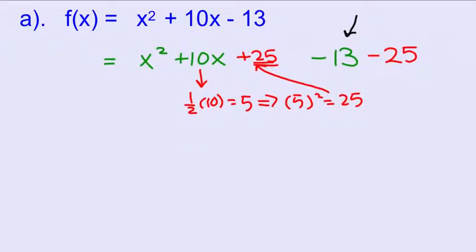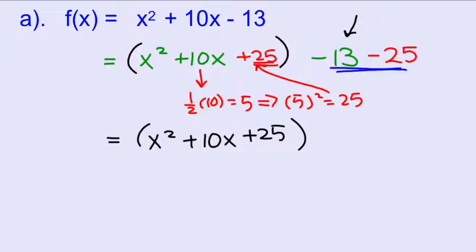Now I'm just going to clean it up. So I have x squared plus 10x plus 25. I'm going to keep that part alone. And then these two numbers that I have are going to stay out here on the end, and we're just going to combine them together. Negative 13 minus 25 is negative 38.